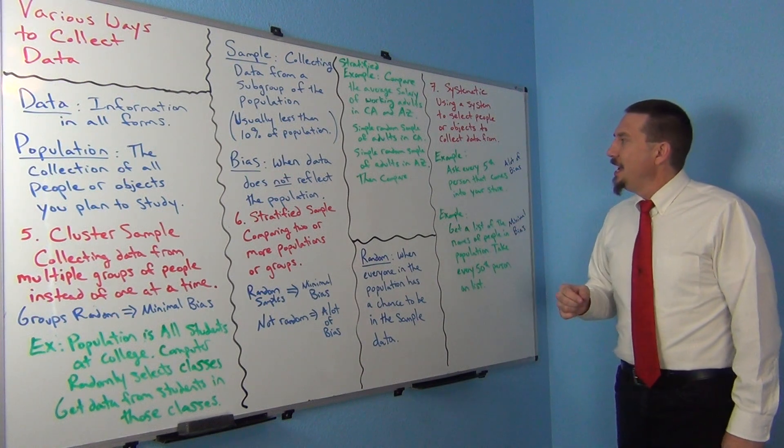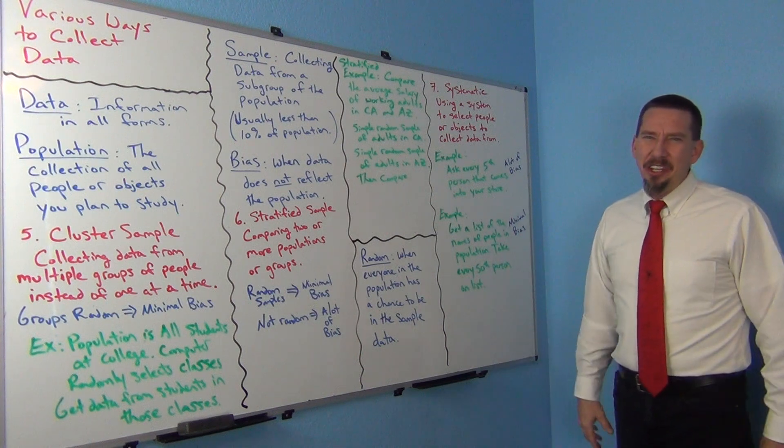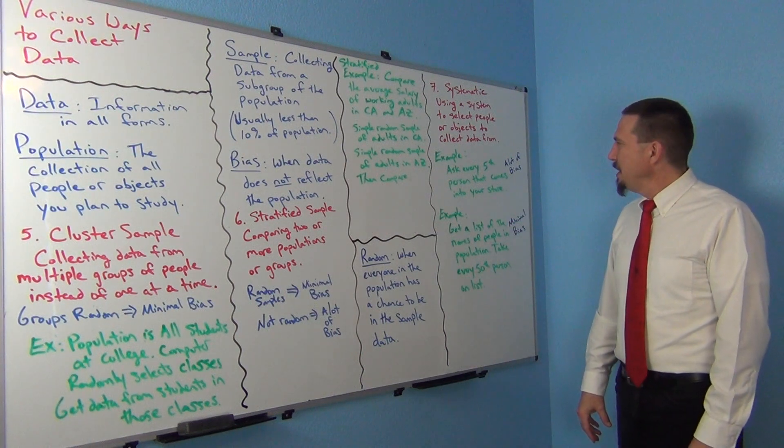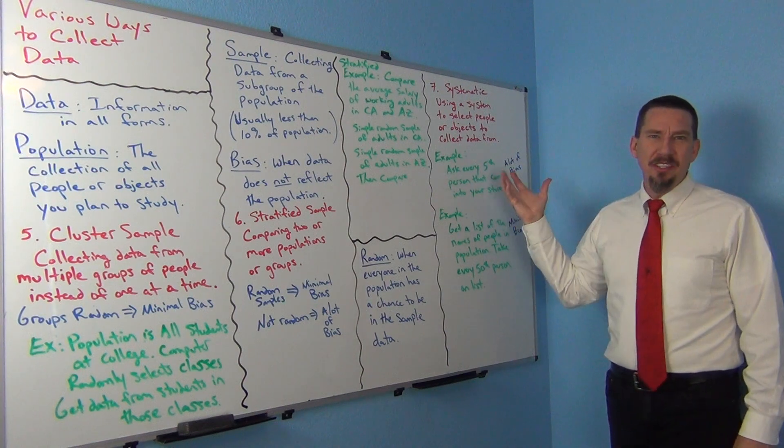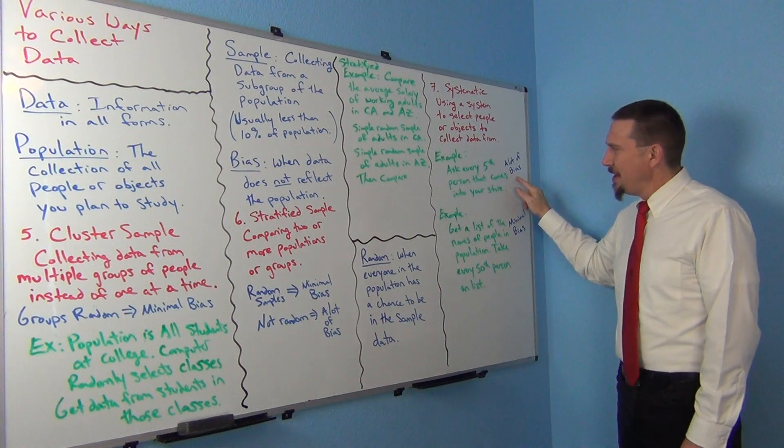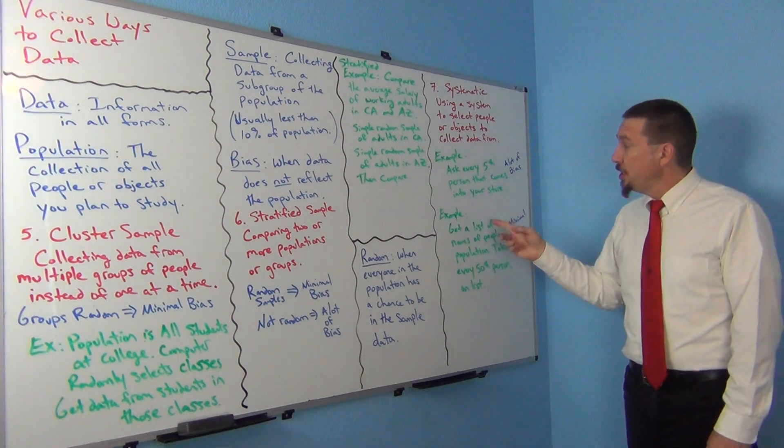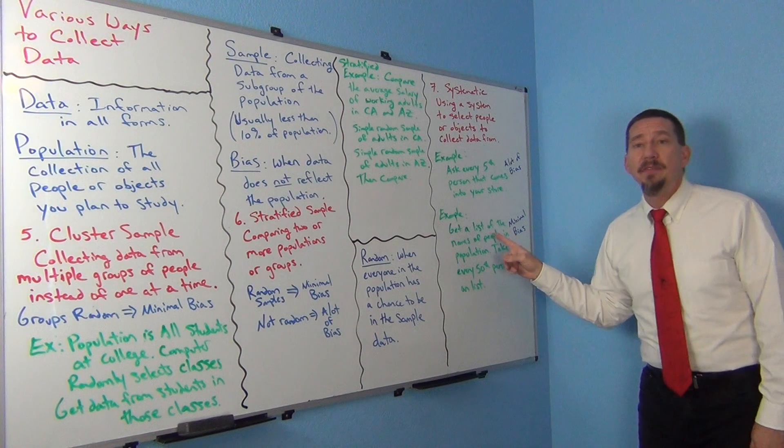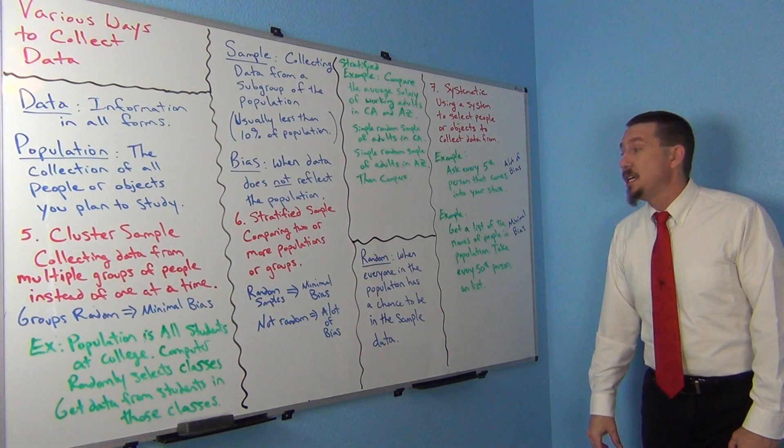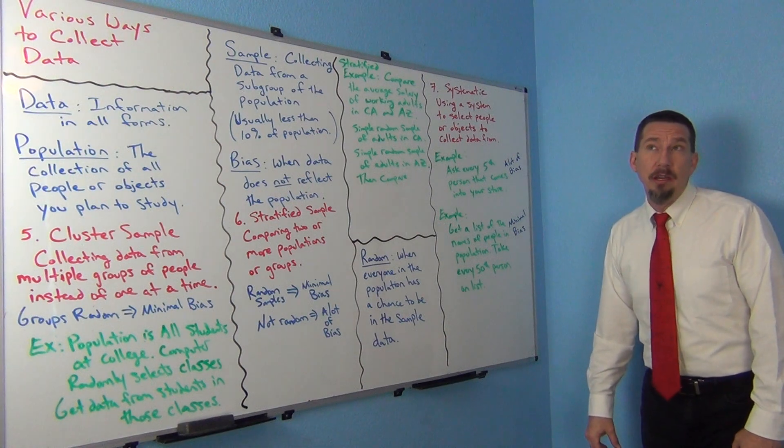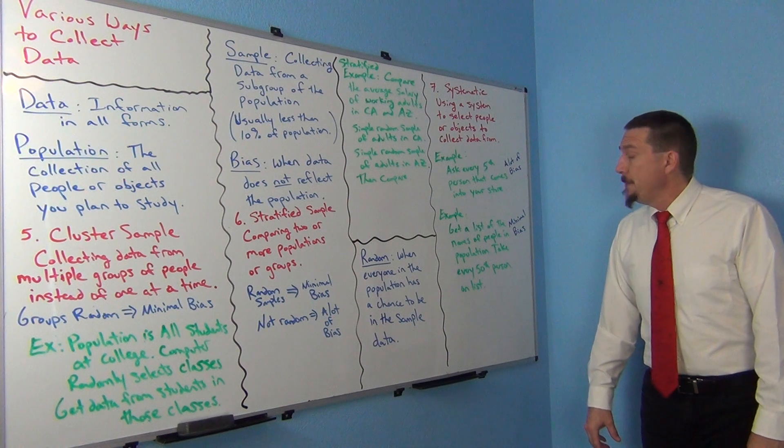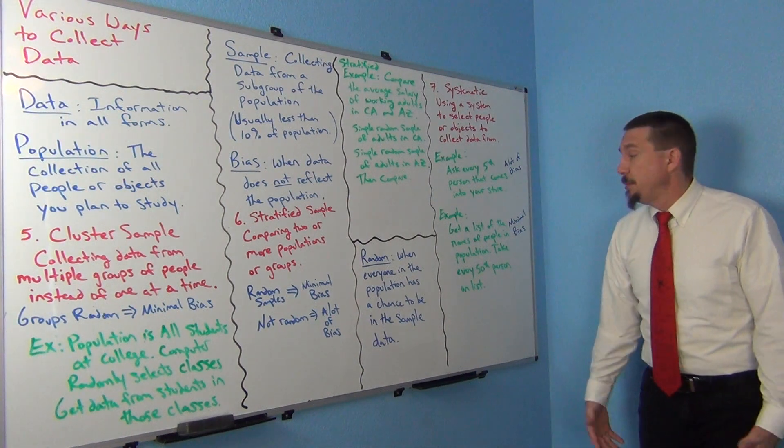By the way that probably would not be very good and almost that'd be borderline on convenience because it's so easy and it wouldn't reflect all of your customers. It's just the customers that came in on that day. And so that would probably have a lot of bias actually. A pretty good systematic would be if I had a list of my entire population. So like if I had, if I was looking at COC, college students at my college, and I had a list of all their names, alphabetical list maybe, and then I just took every 50th person on the list.